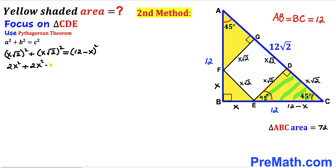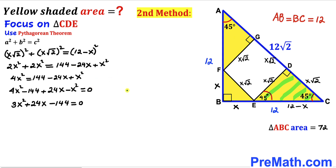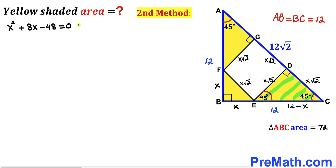Expanding the right side using the identity (a − b)² = a² − 2ab + b²: 4x² = 144 − 24x + x². Moving all terms to one side and combining like terms, then dividing every term by 3, we get the quadratic equation: x² + 8x − 48 = 0.